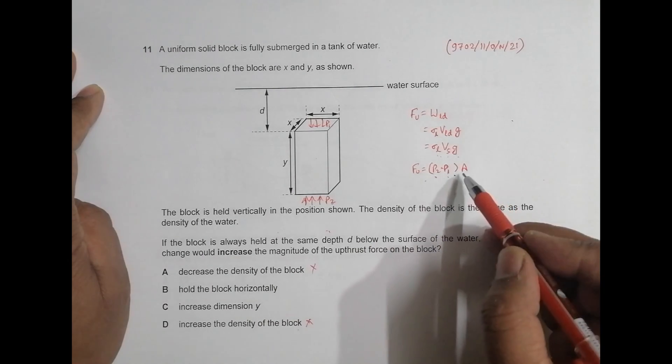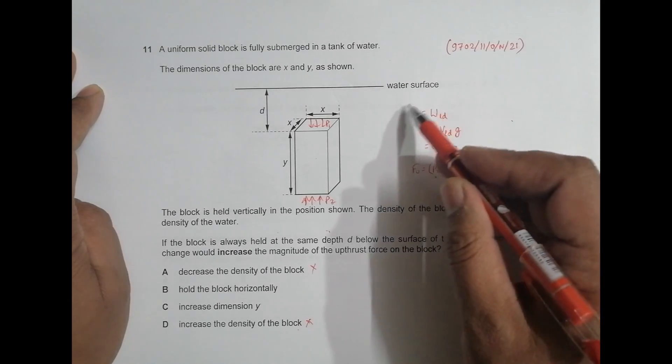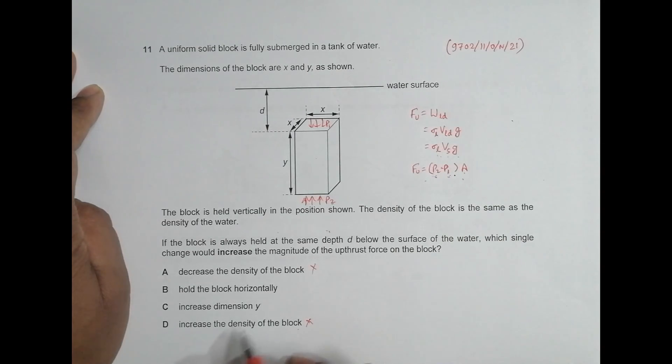So if I do this, area might increase but this thing decreases. So again, same. Or you can say with this formula, there's no difference at all. The only difference is by the use of this thing. So choice number C should be the correct choice.